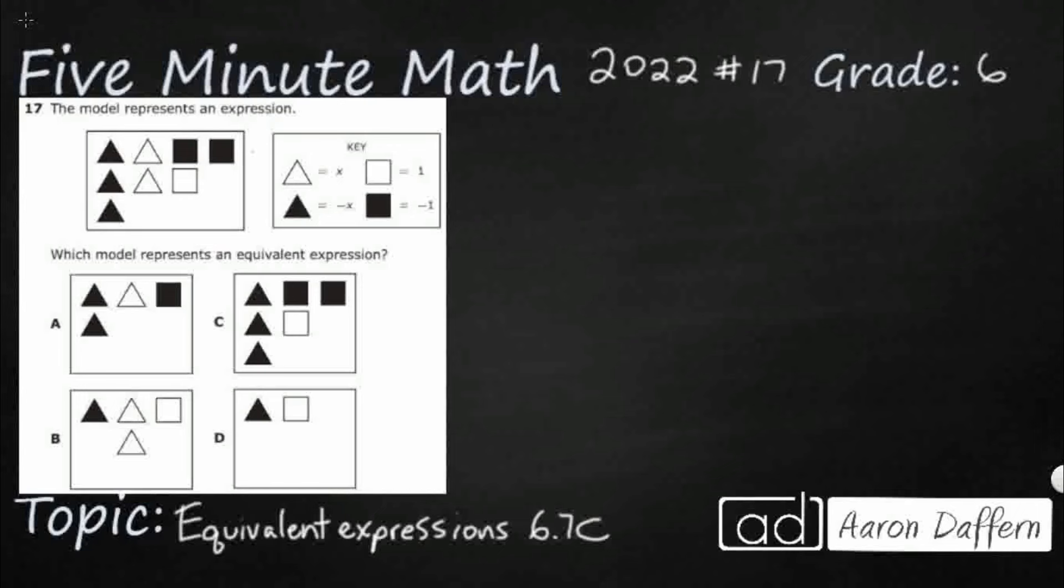We have an expression right up here with some triangles and some squares, and this key is going to help us. We need to find which of these has an equivalent expression. So first, let's figure out what this expression means. All right, so we've got three black triangles, which each represent negative x. So I'm going to put negative x, negative x, negative x.